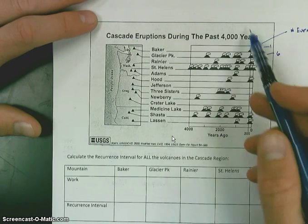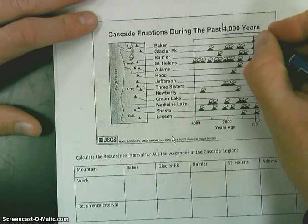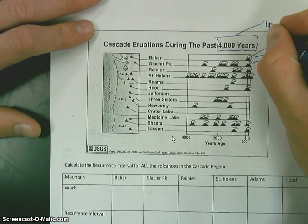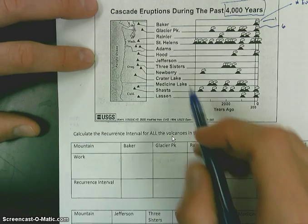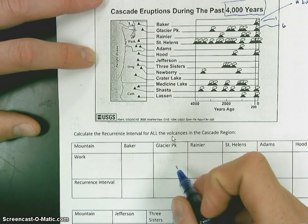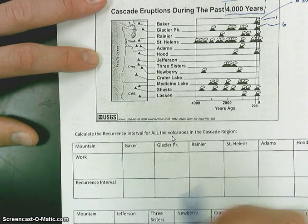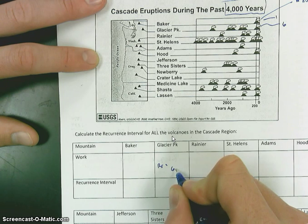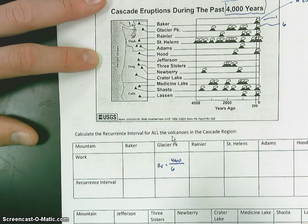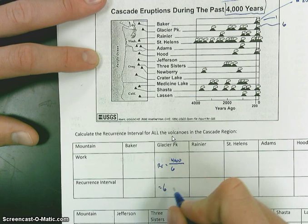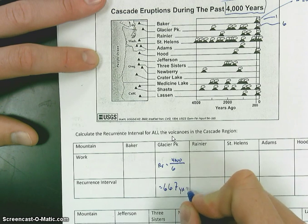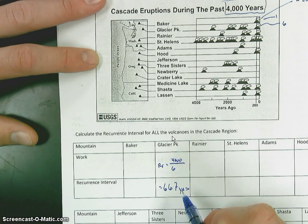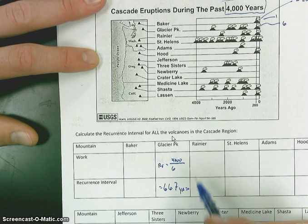Let's assume that the past 4,000 years is the amount of time we're going to use — that's going to be your time. Depending on the mountain you pick, you're going to have to show the work. I'm going to do Glacier Park as my example. My number of events is 6, so the recurrence interval equals 4,000 years divided by 6 events. I think it comes out to something like 667 years — calculate that out on your calculator. That's recurrence interval, and that's how we would do that type of question.